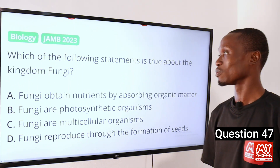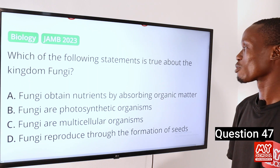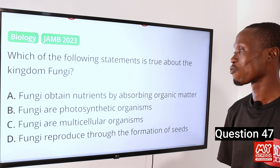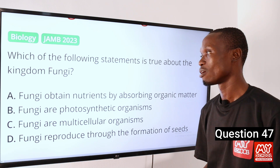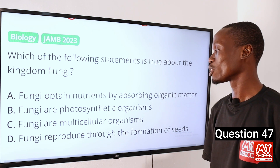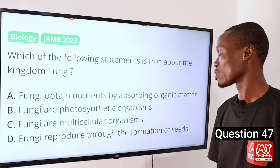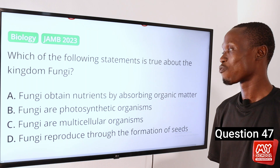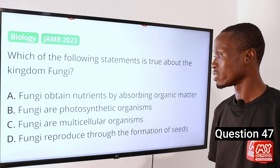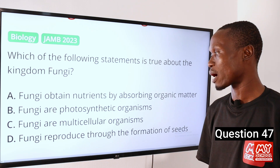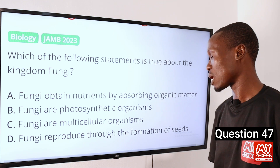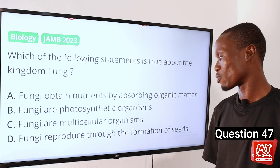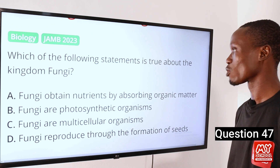Question 47. Which of the following statements is true about the kingdom Fungi? A. Fungi obtain nutrients by absorbing organic matter. B. Fungi are photosynthetic organisms. C. Fungi are multicellular organisms. D. Fungi reproduce through the formation of seeds.